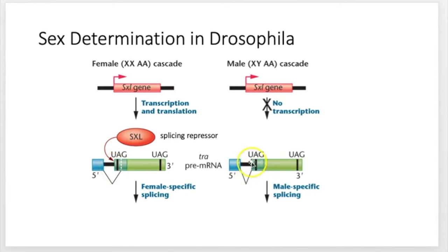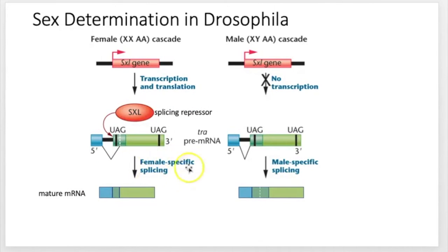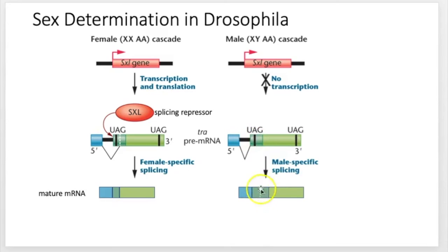If there's no SXL, then splicing happens at that first splice site. But there's another splice site further back. If SXL inhibits splicing at the first splice site, then splicing proceeds at the second splice site. So in female-specific splicing, the mature mRNA has the first exon, a small chunk of the darker green part of the second exon, and then the rest of the lighter green exon. Whereas in male-specific splicing, it retains that entire dark green chunk.